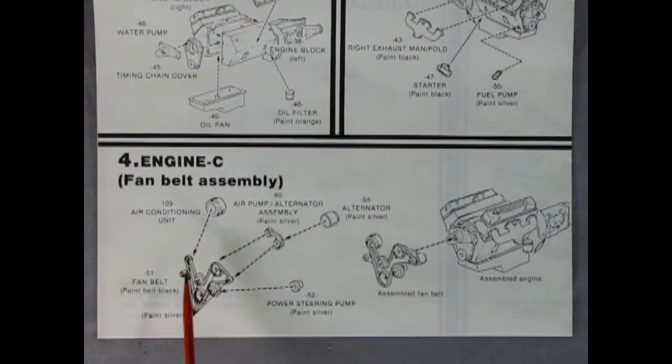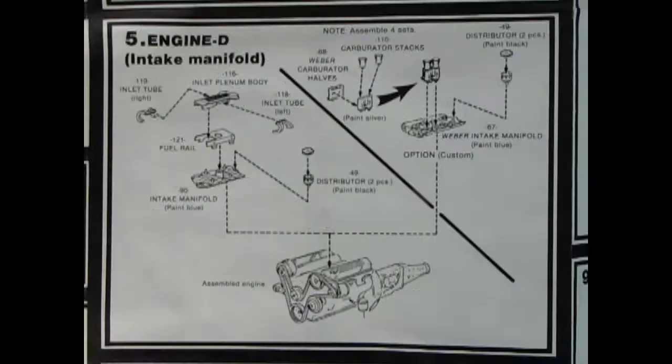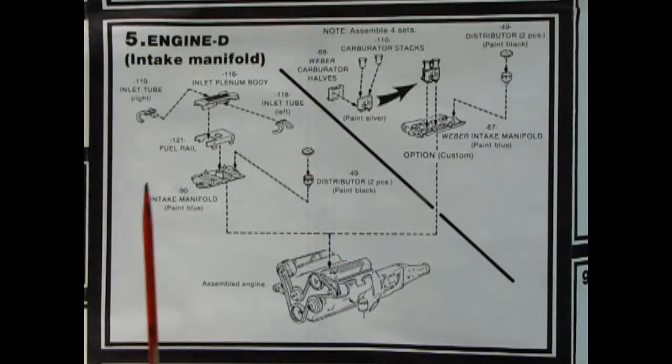Panel four shows the serpentine belt and the air conditioning. This time around they tell you what the parts are, so that's an improvement over the '85 kit. We got an air conditioner and an air pump with an alternator assembly, and then we've got our power steering pump, and the entire assembly goes right on the front of our engine block.